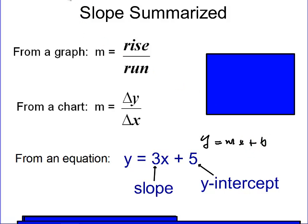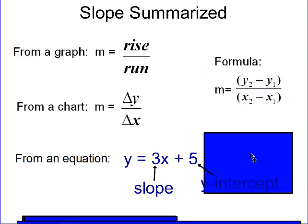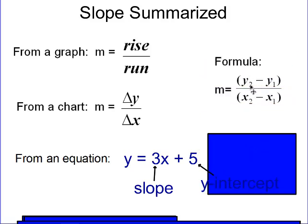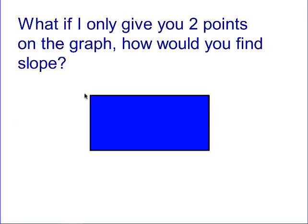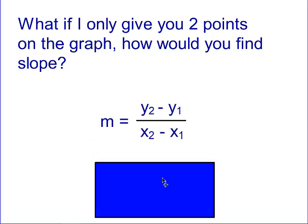Now the method we're going to talk about today is from a formula — when you're given two points. That formula is Y2 minus Y1 divided by X2 minus X1. So if I ask you: what if I only give you two points on the graph, how would you find the slope? The way we do that is through our formula: Y2 minus Y1 divided by X2 minus X1.